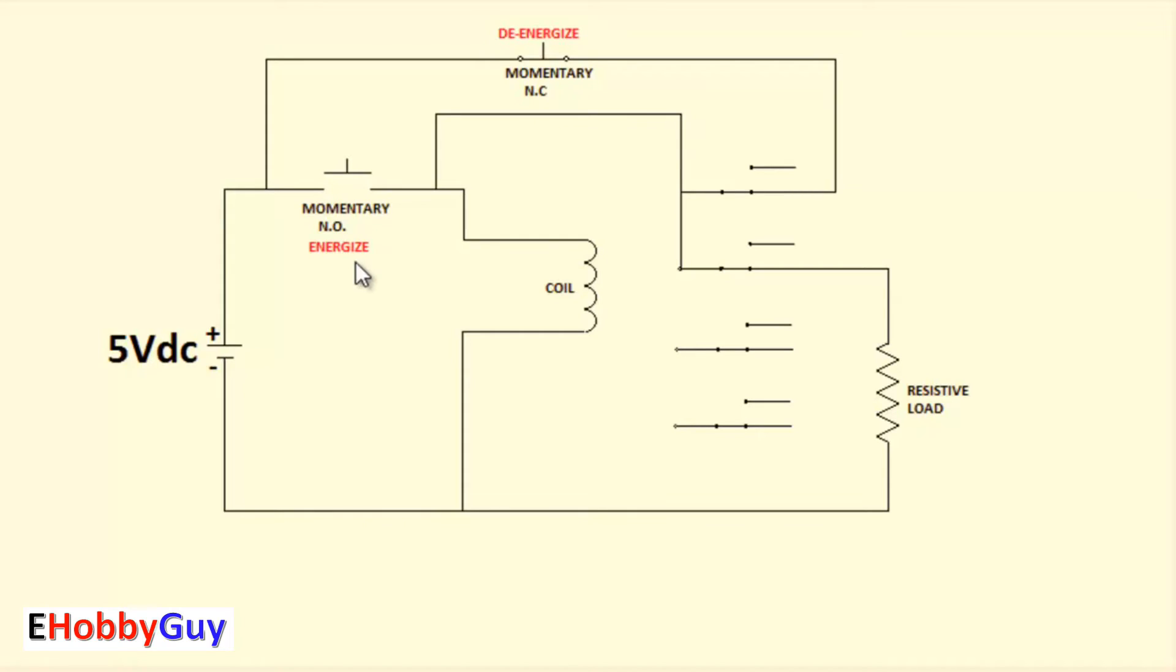So this button is used to energize, and this button is used to de-energize. When we look back at the current flow, if we interrupt the current flow here by pressing this, we're opening the circuit and breaking the current flow. And as a result, the coil de-energizes and we're back to a normal state.